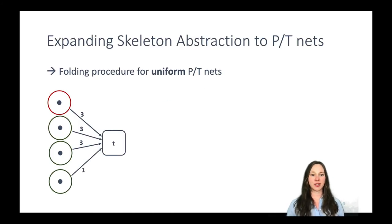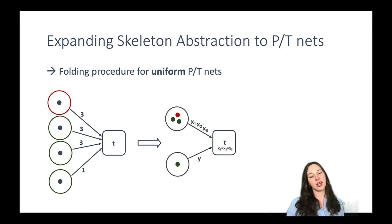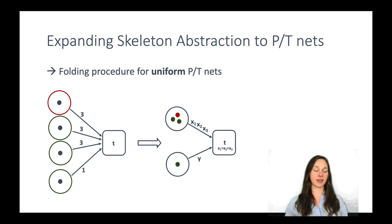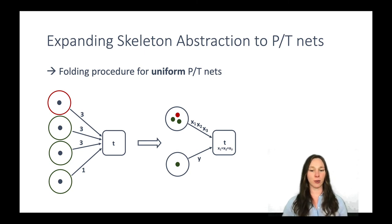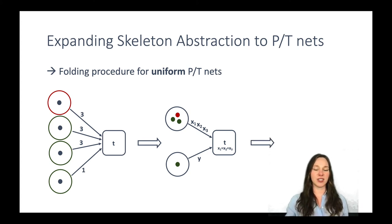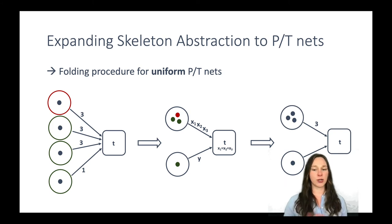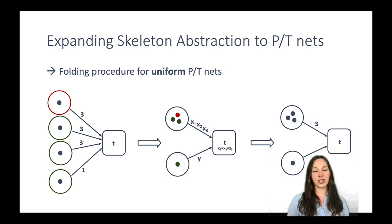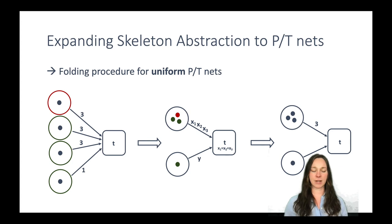Therefore we implemented a folding procedure for uniform place-transition nets. This procedure takes the place-transition net and folds it into a colored Petri Net. The places of the net become the colored tokens of the colored net, and the transitions become the firing modes. We get a much smaller net which we can then decolorize to get the skeleton net for analysis. Since the reachability graph of a place-transition net and its folding are isomorphic, we can transfer results from the skeleton net back to our initial Petri Net.